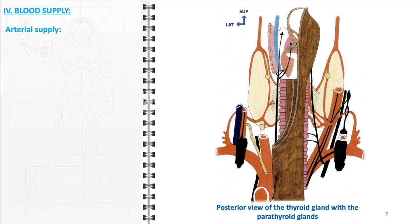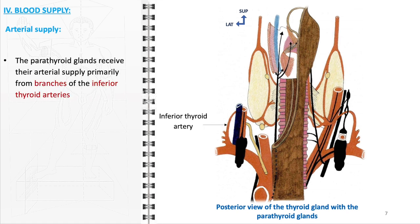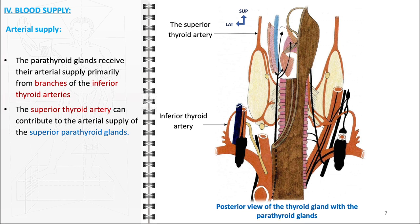The blood supply to the parathyroid glands is a critical aspect of their anatomy, ensuring they function effectively as part of the endocrine system. The primary source of arterial blood comes from the branches of the inferior thyroid arteries. These arteries, stemming from the thyrocervical trunk — a major branch of the subclavian artery — provide a rich and dedicated blood supply to the parathyroid glands. In addition, the superior thyroid artery also plays a role in supplying blood to the parathyroid glands, particularly the superior parathyroid glands.